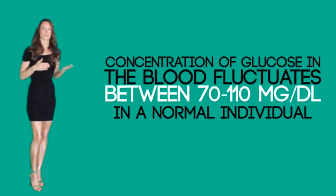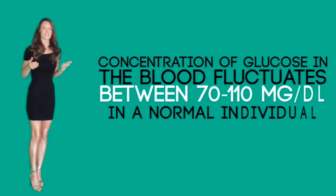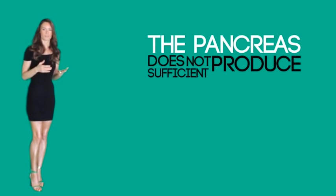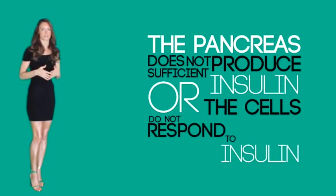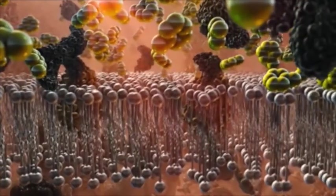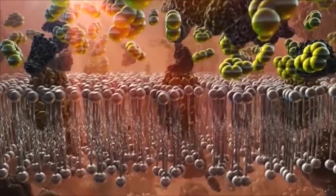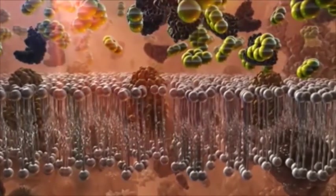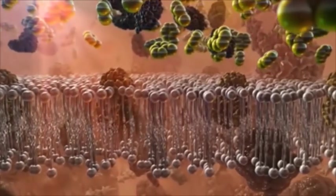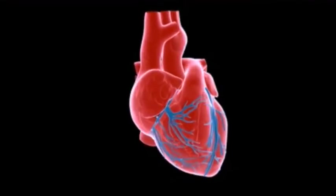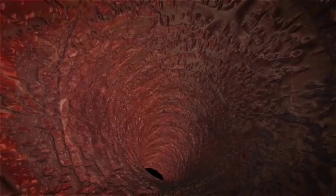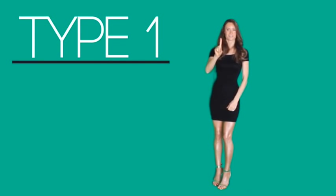In order to enter the cells, glucose needs a hormone known as insulin, produced by the pancreas. Every time we eat, food is broken down into glucose and the pancreas produces insulin according to the glucose level in the blood. Insulin carries glucose from the blood into different cells, reducing blood glucose levels. Generally, glucose concentration in the blood fluctuates between about 70 to 110 in a normal individual.